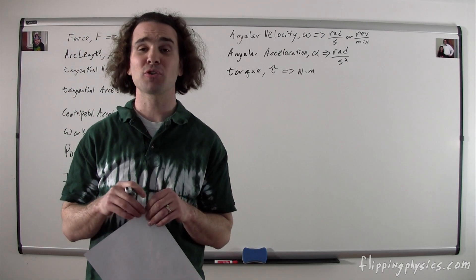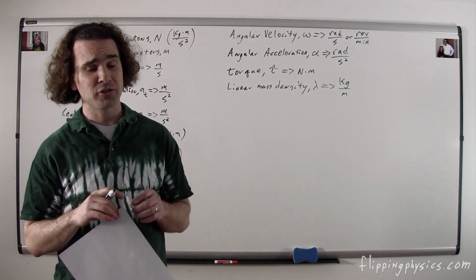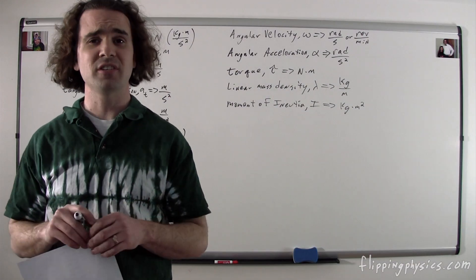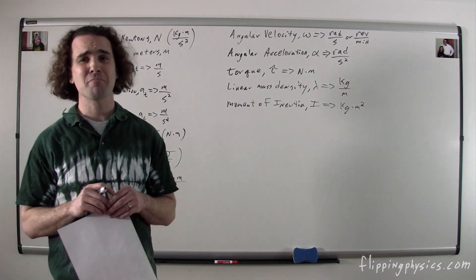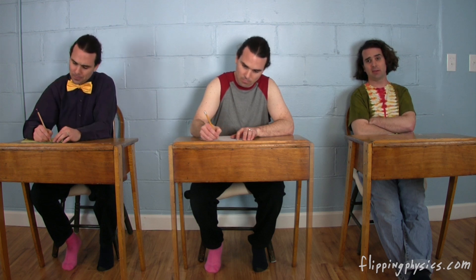Bobby, what are the symbol and dimensions for linear mass density? The symbol for linear mass density is lambda, and it's in kilograms per meter. Billy, what are the symbol and dimensions for moment of inertia? The symbol for moment of inertia is an uppercase I, and its dimensions are kilograms times meters squared. Bo, what are the symbol and dimensions for angular momentum? The symbol for angular momentum is an uppercase L, and its dimensions are kilograms times meters squared over seconds.